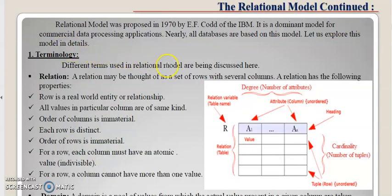Relational model was proposed in 1970 by E.F. Codd of IBM. It is a dominant model for commercial data processing applications. Nearly all databases are based on this model. Let us explore this model in details. Terminology - different terms using relational model are being discussed here.